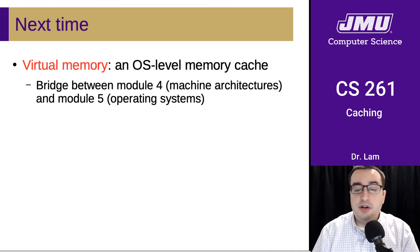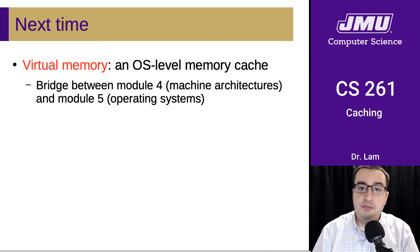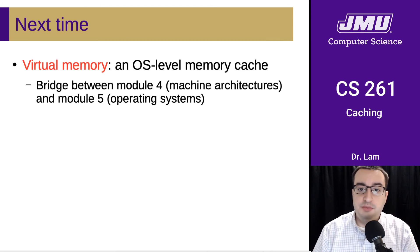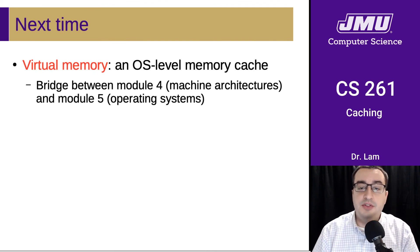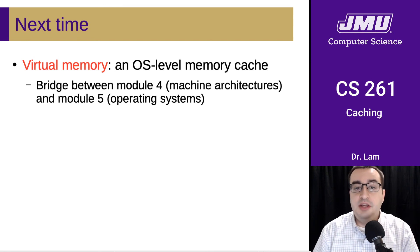That wraps up our discussion of caching, aside from a couple of examples. Our next topic is a specific kind of cache called virtual memory — an operating system-level memory cache. It serves as a nice bridge between Module 4, which is about the hardware, and Module 5, which is about the software. This will be an example of a software-level system for caching pieces of memory.